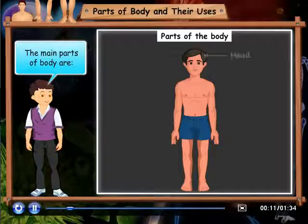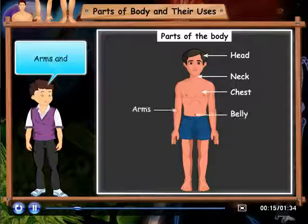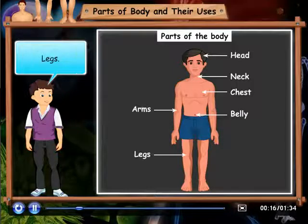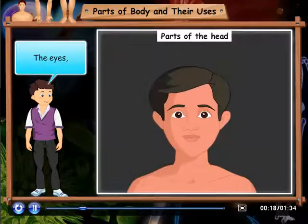The main parts of our body are Head, neck, chest, belly, arms and legs.